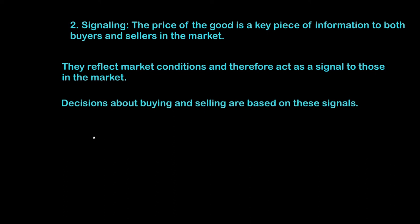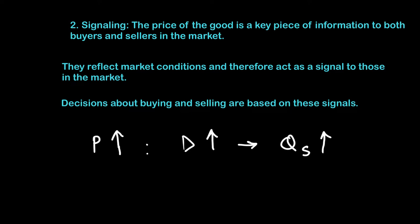Let's do an example. If there is an increase in the price of a good, what does that signal to the producer? It signals that demand for the good is going up. If a producer wants to increase his profits and react to the signal, he will increase his quantity supplied. The quantity supplied goes up because there is more profitability as reflected by a rise in price. Firms are reacting to this information in order to make more profits.